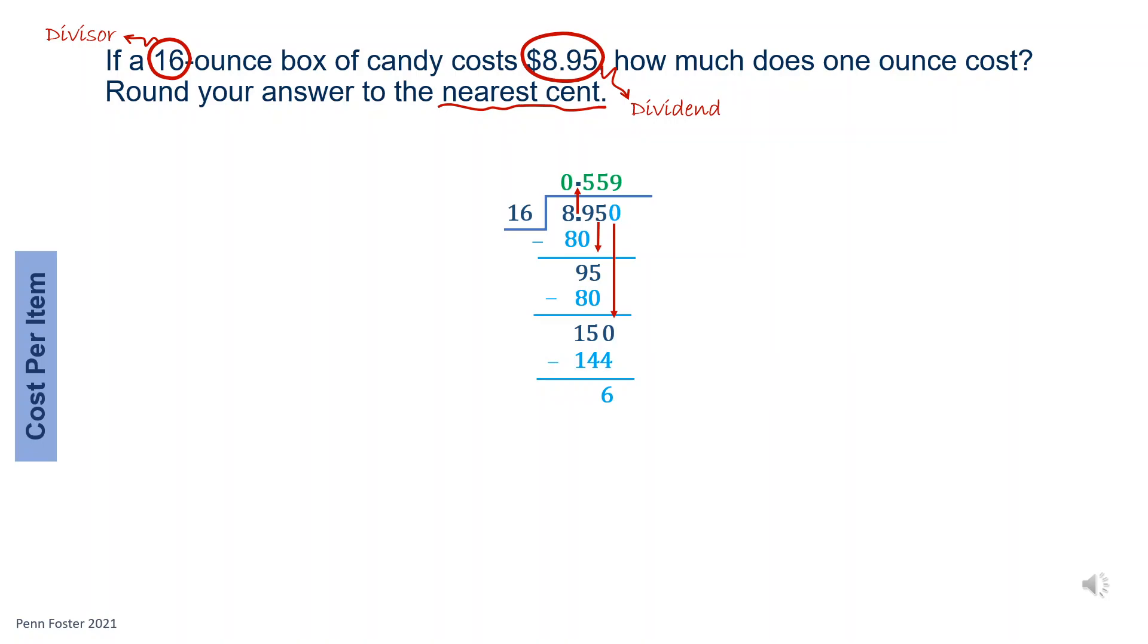The quotient has three digits. Round the answer to the hundredths place. Look at the thousandths place. Since it's more than 5, then the 5 in the hundredths place goes up to 6. Each ounce of candy costs 56 cents.